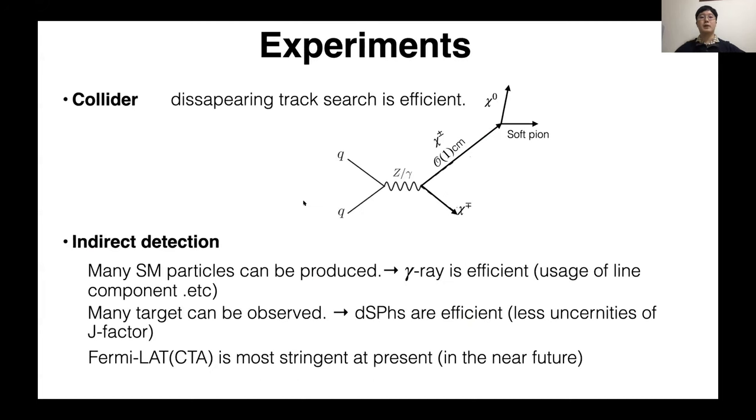Finally, I'll talk about experiments. There are three types of experiments: collider, indirect detection, and direct detection. In collider, disappearing track search is known as the most efficient one. This search is the track of chi plus-minus decaying into chi zero and soft pion. Due to the strong degeneracy between chi plus-minus and chi zero, chi plus-minus becomes a long-lived particle and leaves the order one centimeter track, which can be reconstructed in ATLAS.